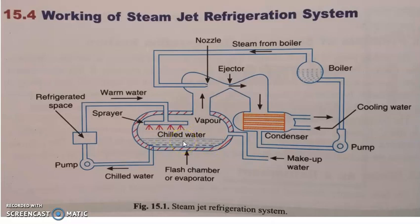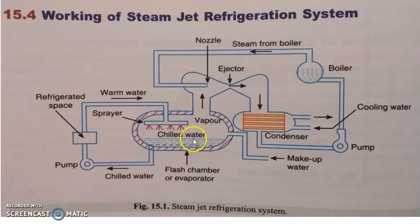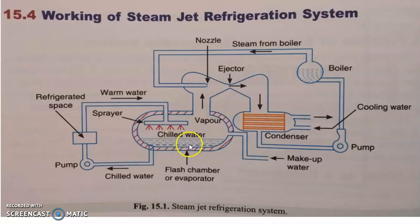cold water or especially chilled water. You can see a water level surface over here. Suppose using some method, suppose we can reduce the prevailing pressure maintained over the surface of this water. What will happen? More and more water molecules will be escaping the surface of this chilled water and thereby cooling down the remaining water. This energy required for vaporization or latent heat of vaporization will be taken from the surrounding water molecules.